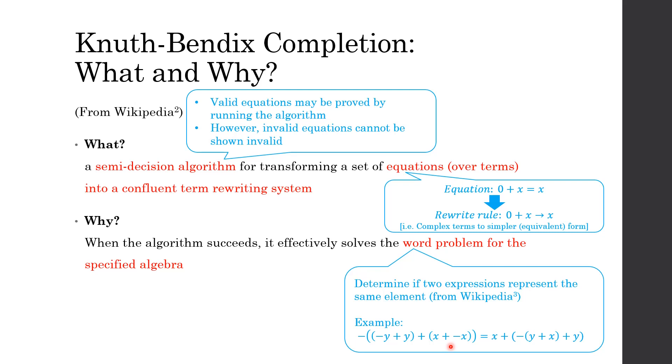So what's the difference between semi and full decision? For full decision algorithm, for an invalid equation, it can be shown to be invalid when it passes through the algorithm itself. However, the key difference is for semi-decision algorithm, invalid equations cannot be shown to be invalid.